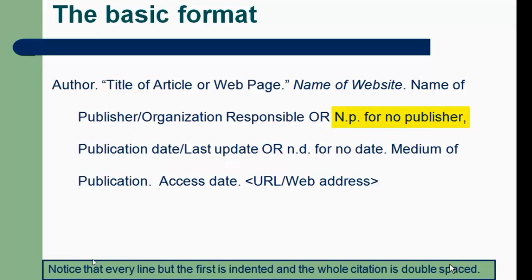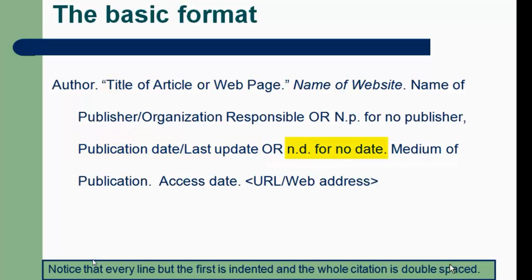If you have a publisher, include it. If you don't, put capital N period, little p period for 'no publisher,' then a comma. After that, the publication, copyright, or last update date — to whatever level you can find it. It may just be a year, or it may be a day, month, and year. If you don't find a date, put little n period, little d period for 'no date.'